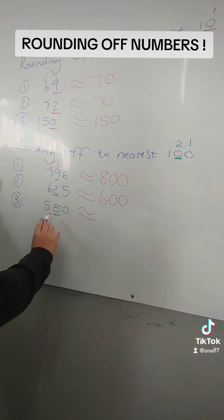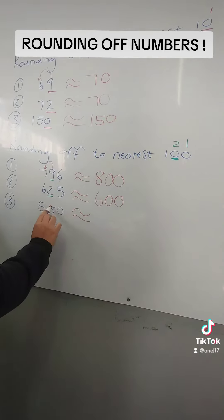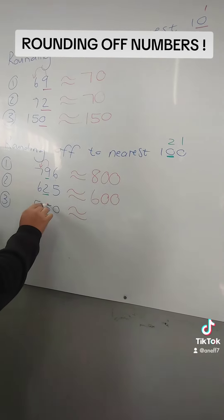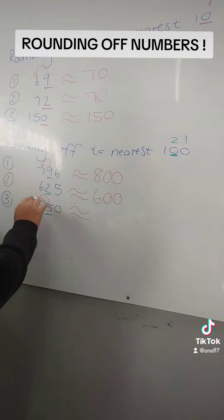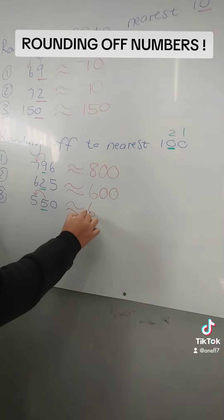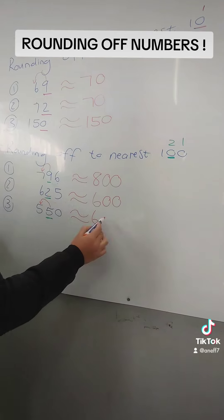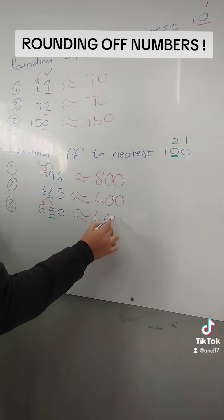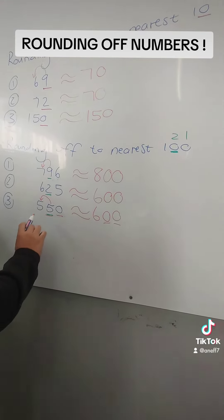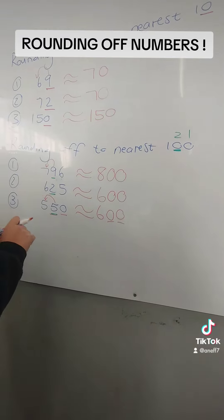And if we look at the last one, it's a 5. A 5 or bigger changes the next digit. So this one is going to change my 5 to a 6, and after it's going to be 0, 0, 0. Because it's two digits after, and that's how we do rounding off.